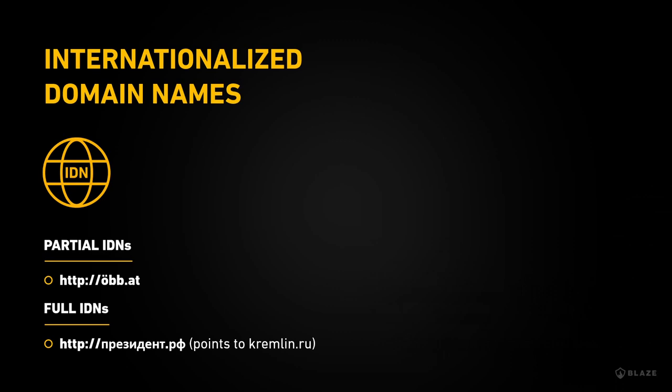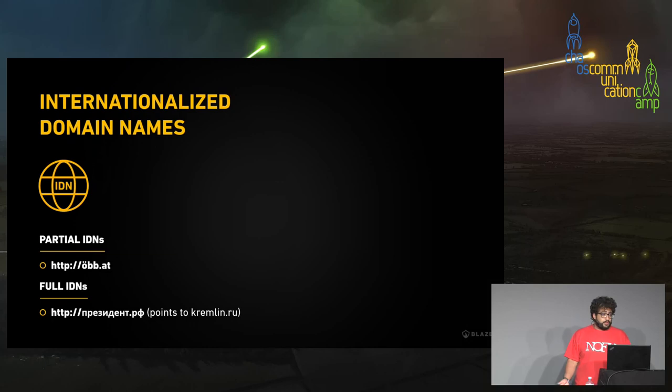Partial IDNs, like öbb.at, have some internationalized characters such as the O with an umlaut, but the TLD is the Latin 'AT'. Whereas full IDNs have every part in a non-Latin script. For example, there's a full Cyrillic domain that points to the Kremlin's official website.